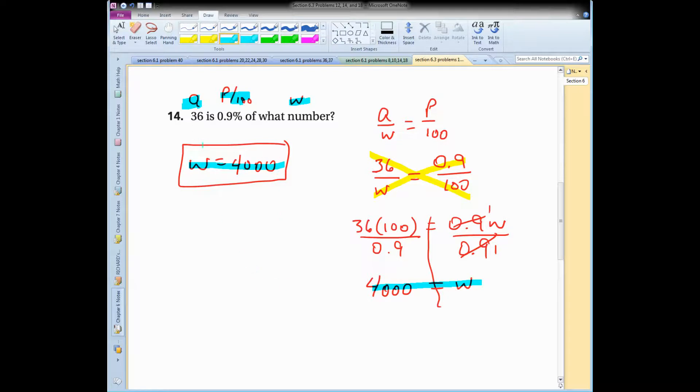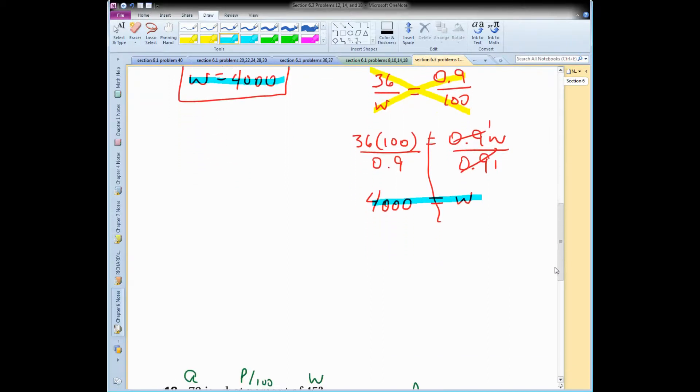Does that make sense? 36 is 0.9 percent. So 0.9 percent is not even 1 percent, let alone 100, not even 1 percent of something. So it's a very small amount. So if I compare 36 to 4,000, 36 is pretty small compared to 4,000. So I probably did that one right. I'm feeling pretty confident.